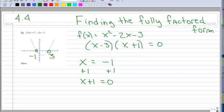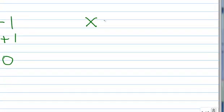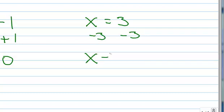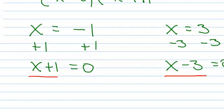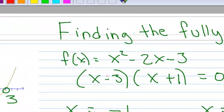Let's do the same thing with the other zero, or x-intercept. We have x equals 3. I want to make this equal to 0, so I'm going to subtract 3 from both sides, and I get x minus 3 equals 0. What do you notice about these two mini equations and these two factors? They are the same.